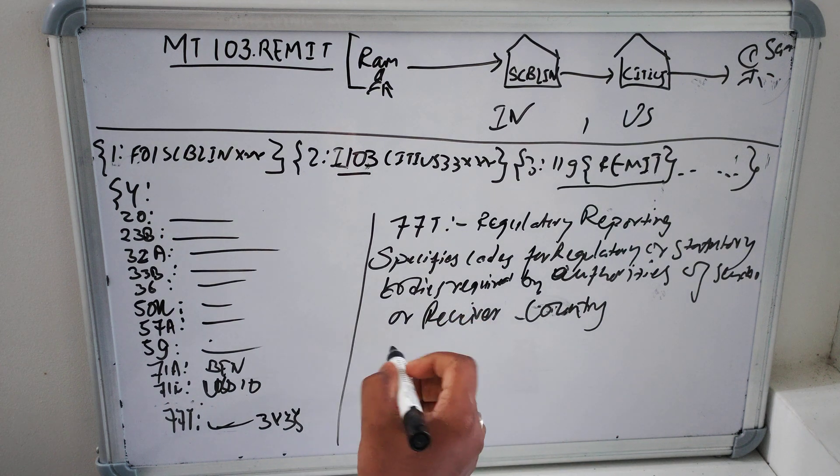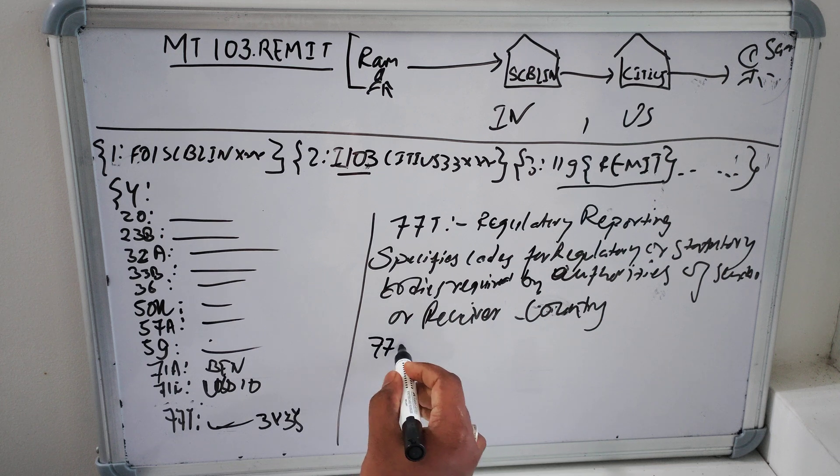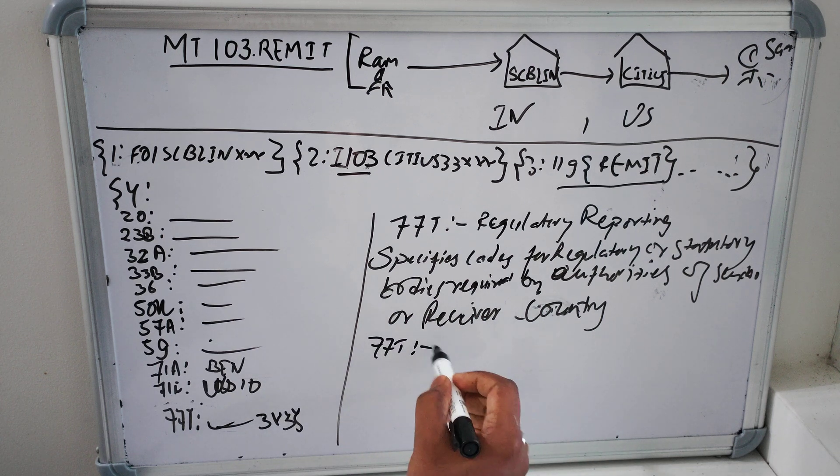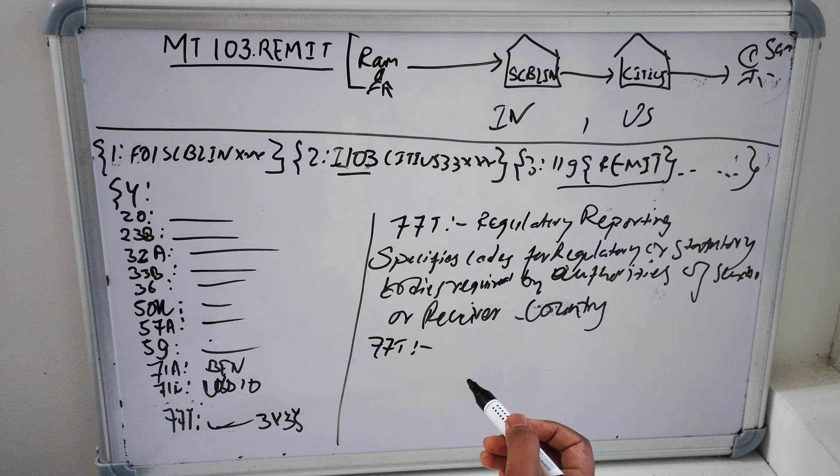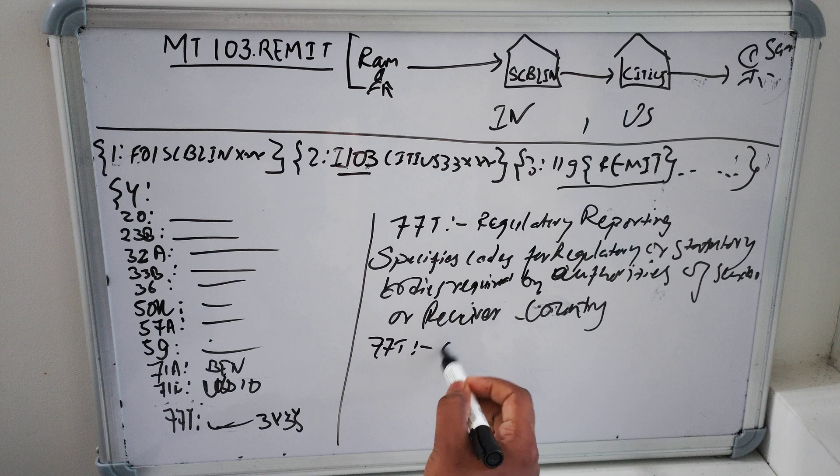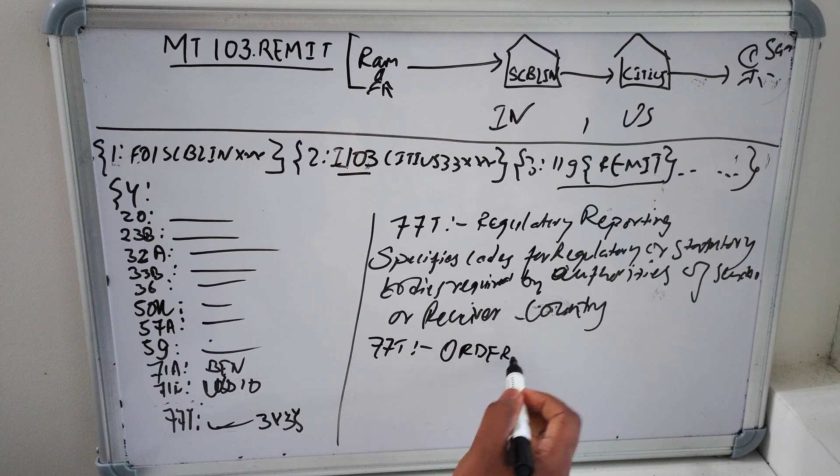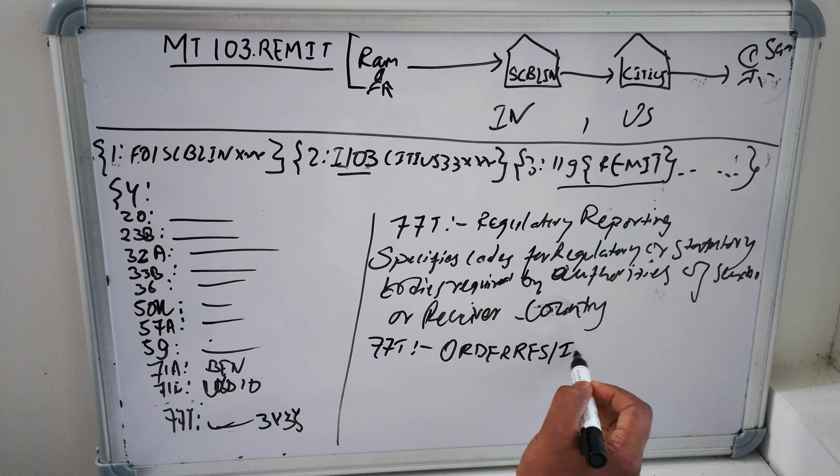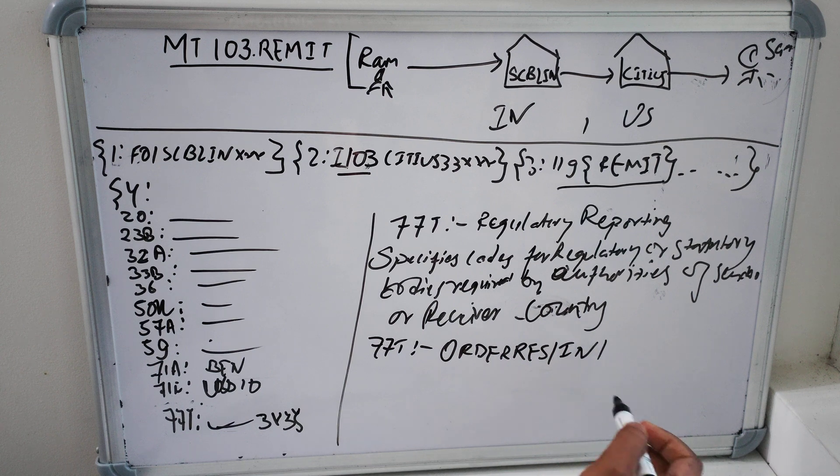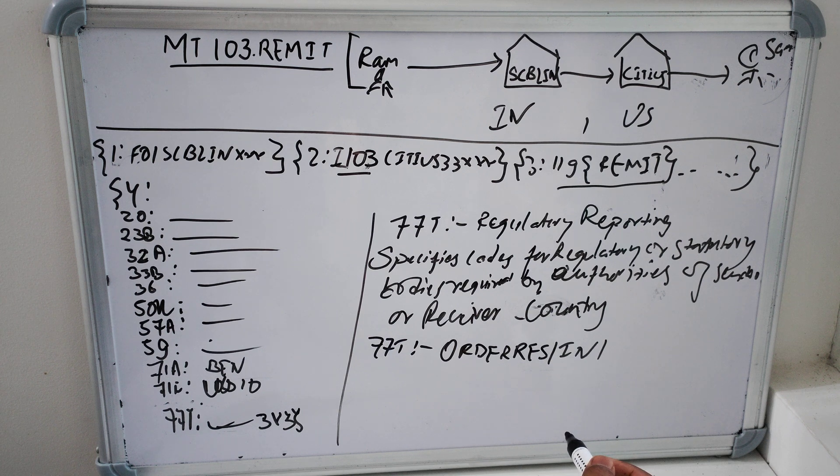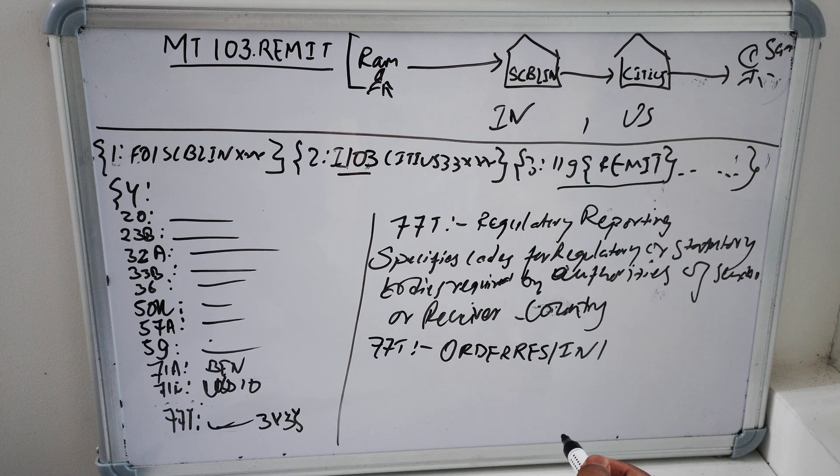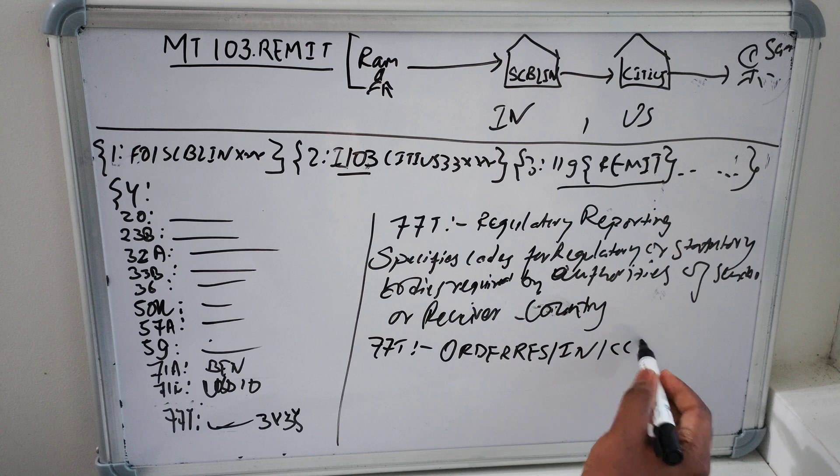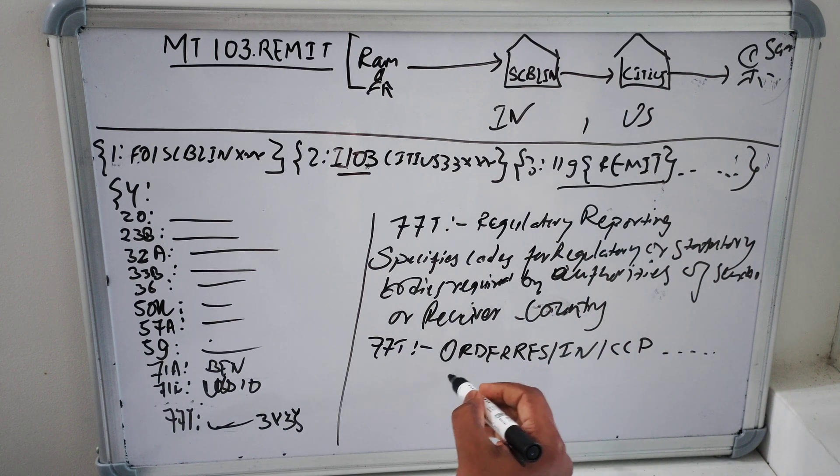For example, let's take one example. 77T let's say if SBLIN is sending, then in that case let's say it is /ORDERRES/ followed by country code IN and then followed by the purpose code which will be used in India, the purpose code ends three character. For example if I am using CCP this thing.